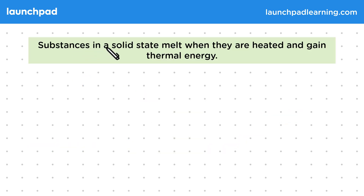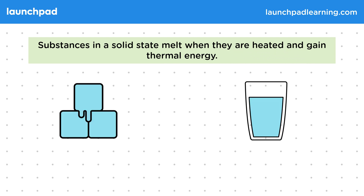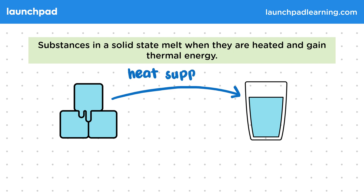Substances in a solid state melt when they're heated and gain thermal energy. So ice and water are the same substance but in different states. Ice is melted when heat is supplied and there's a gain in thermal energy.